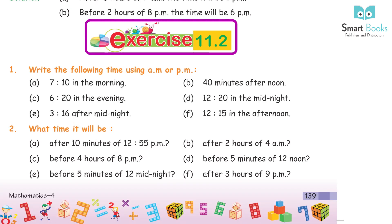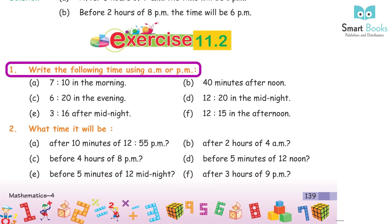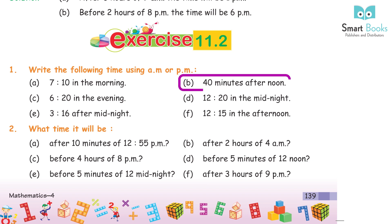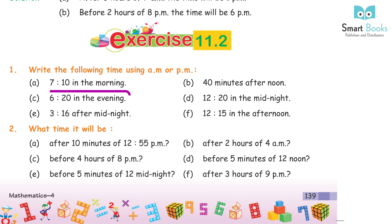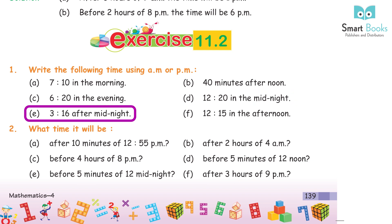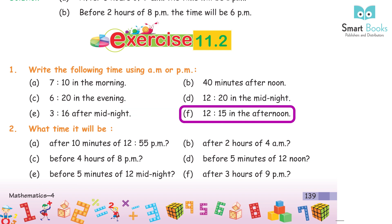Exercise 11.2, Question 1: Write the following time using AM or PM. A. 7:10 in the morning — AM. B. 40 minutes after noon — PM. C. 6:20 in the evening — PM. D. 12:20 in the midnight — AM. E. 3:16 after midnight — AM. F. 12:15 in the afternoon — PM.